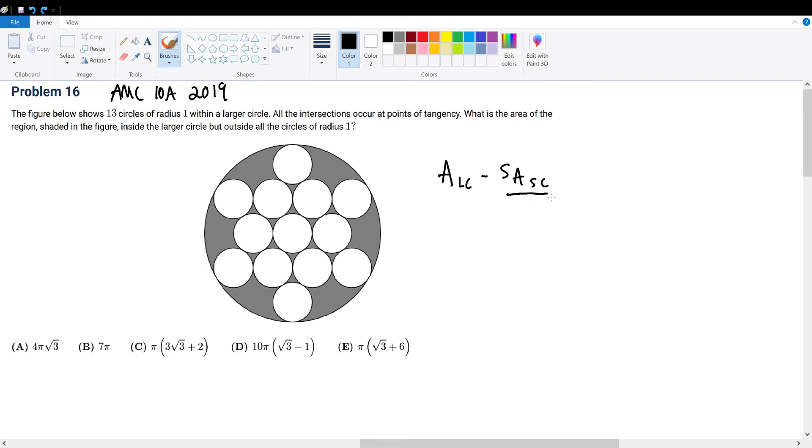To find the sum of the areas of the smaller circle, that's simple. We have 13 small circles with radius of 1, pi r squared becomes 13 times pi. So now we're just going to find the area of the larger circle.